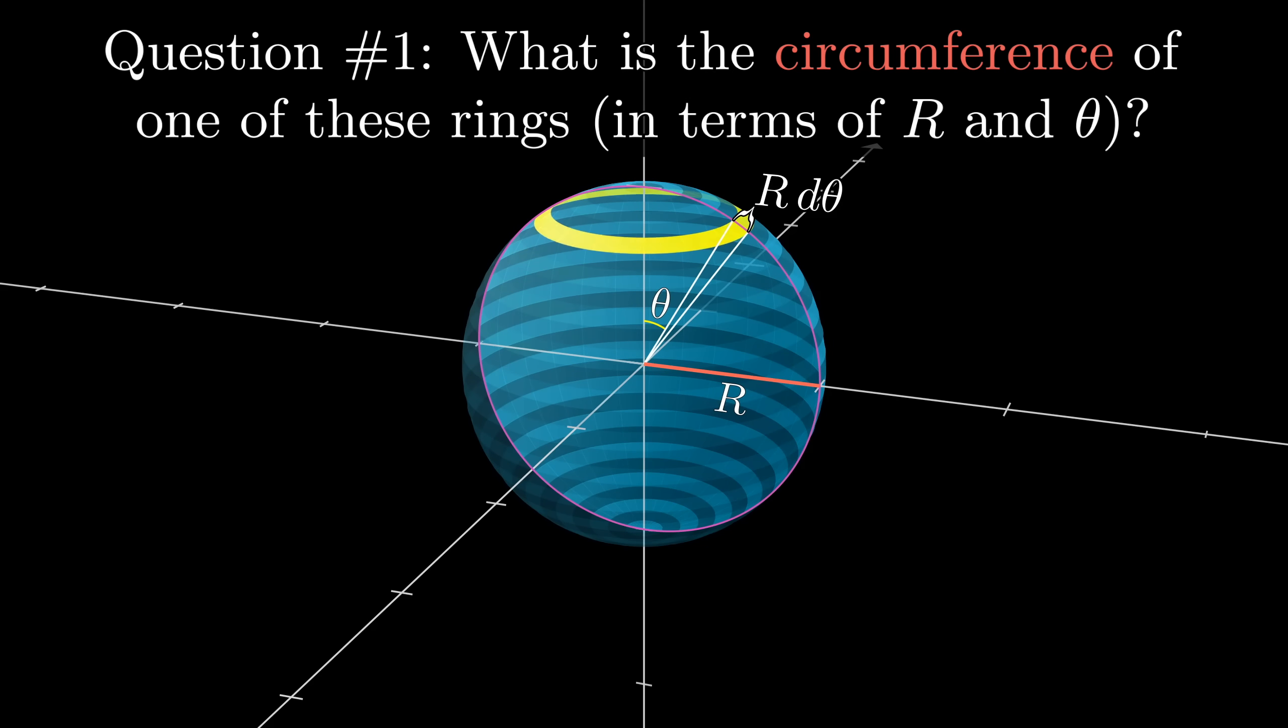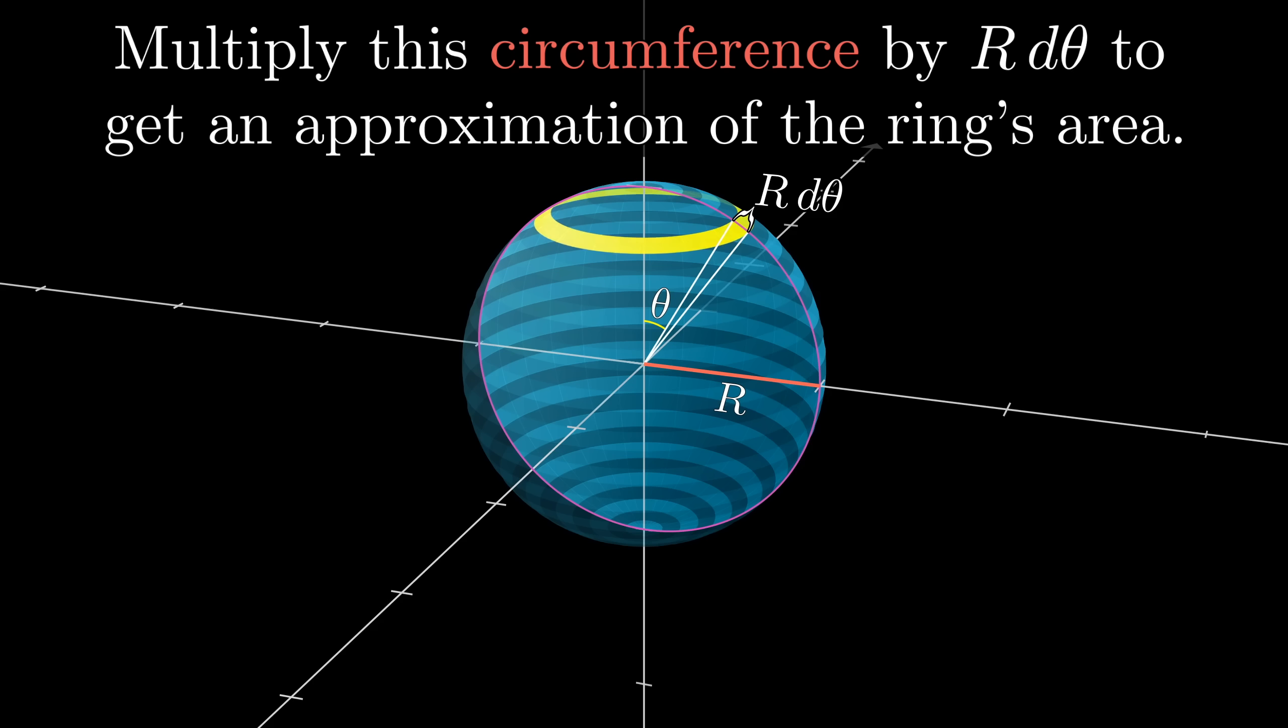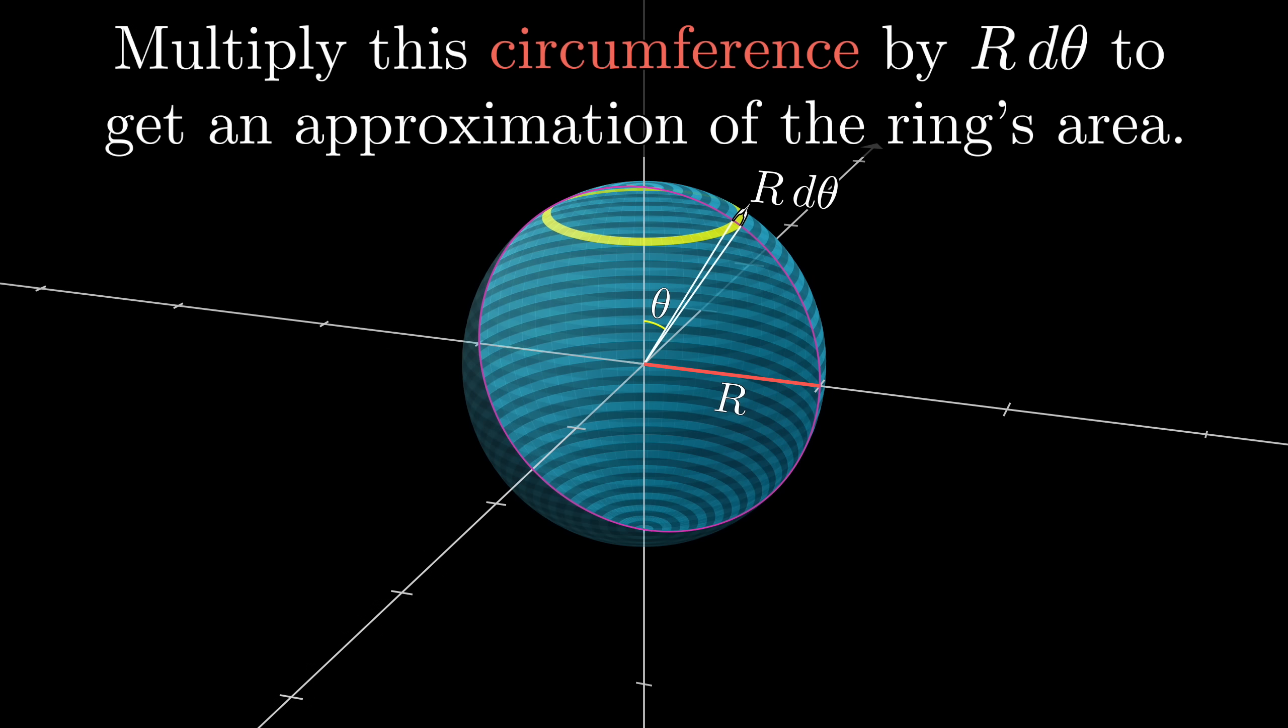Once you have that, go ahead and multiply the answer by the thickness r times dθ to get an approximation for the ring's area, an approximation that will get better and better as you chop up the sphere more and more finely.